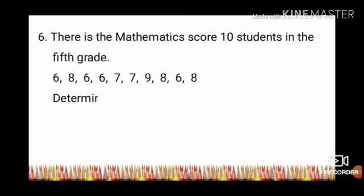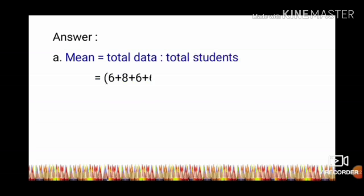Determine: A. Mean, B. Median, C. Mode. Answer A: Mean is total data divided by total students. 6 plus 8 plus 6 plus 6 plus 7 plus 7 plus 9 plus 8 plus 6 plus 8, divided by 10, equals 71 divided by 10, equals 7.1.